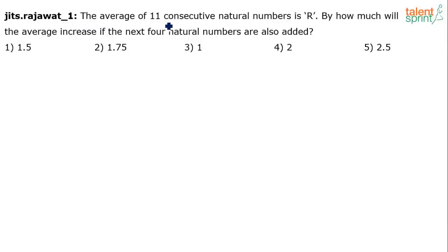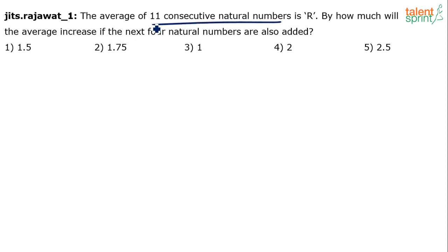The question says the average of 11 consecutive natural numbers is R. By how much will the average increase if the next 4 natural numbers are also added? So basically there are 11 consecutive natural numbers, the average of which is given as R, and we need to find by how much this average will increase if the next 4 natural numbers are also included.